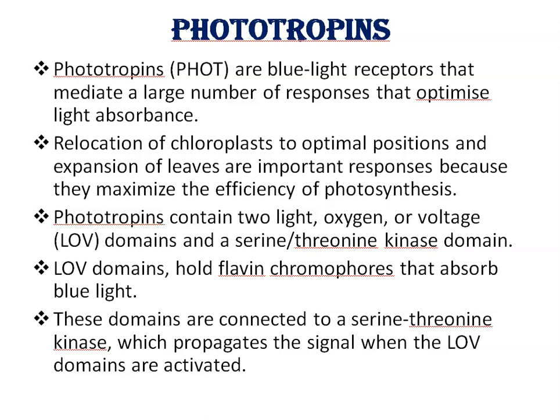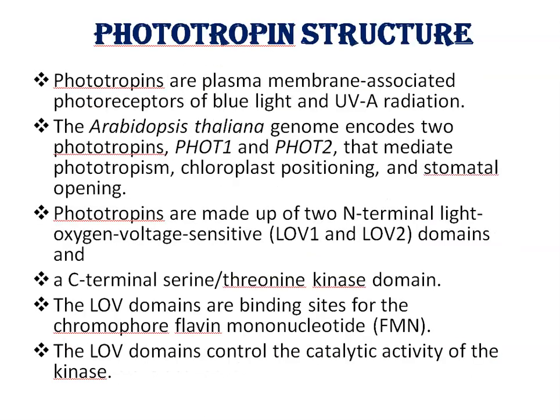These domains are connected to a serine-threonine kinase which propagates the signal when the LOV domains are activated. Now, phototropin structure. Phototropins are plasma membrane-associated photoreceptors of blue light and UVA radiation. Arabidopsis thaliana, a model plant, its genome encodes two phototropins, phot-1 and phot-2, that mediate phototropism, chloroplast positioning, and stomatal opening. Phototropins are made up of two N-terminal light oxygen voltage-sensitive domains, LOV-1 and LOV-2, and a C-terminal serine-threonine kinase domain.